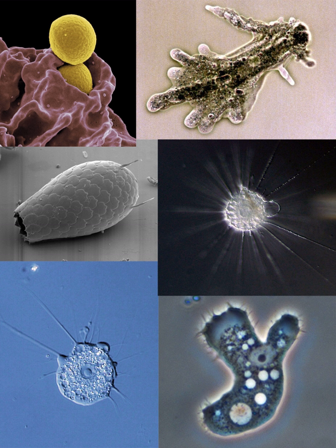Amoebae move and feed by using pseudopods, which are bulges of cytoplasm formed by the coordinated action of actin microfilaments pushing out the plasma membrane that surrounds the cell. The appearance and internal structure of pseudopods are used to distinguish groups of amoebae from one another. Amoebazoan species, such as those in the genus Amoeba, typically have bulbous lobose pseudopods, rounded at the ends and roughly tubular in cross-section.